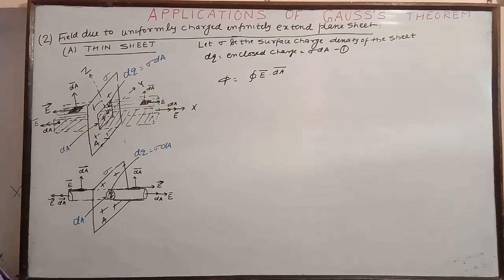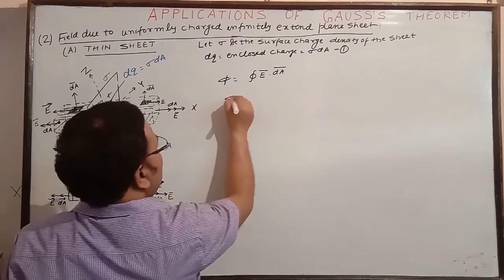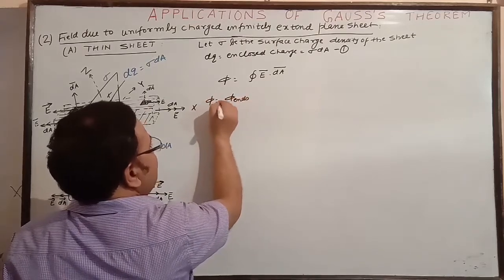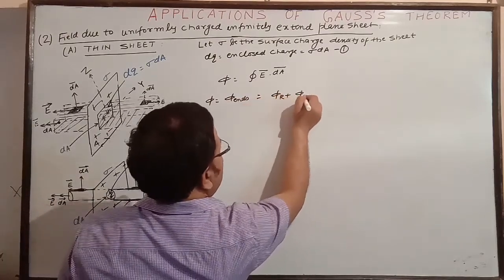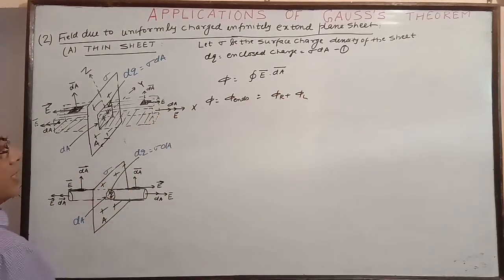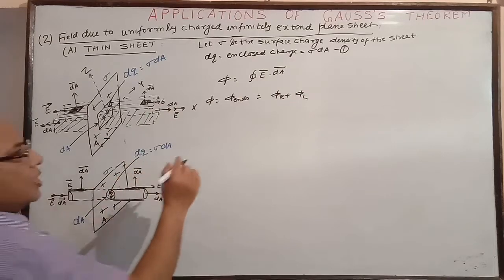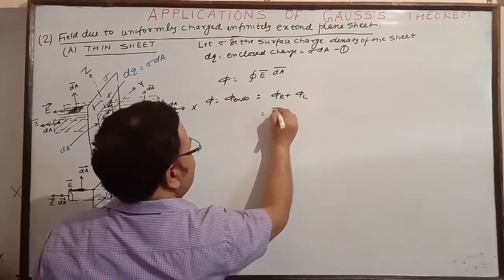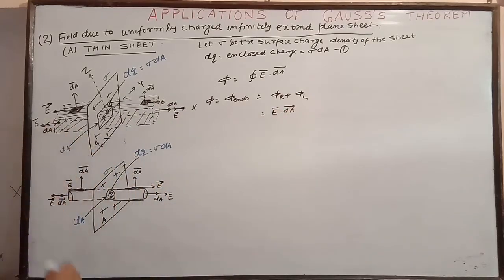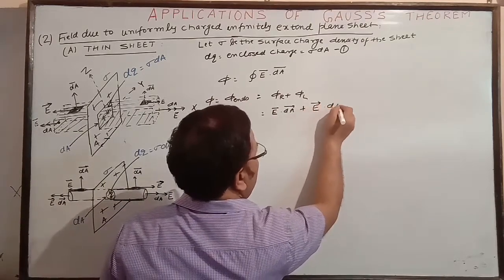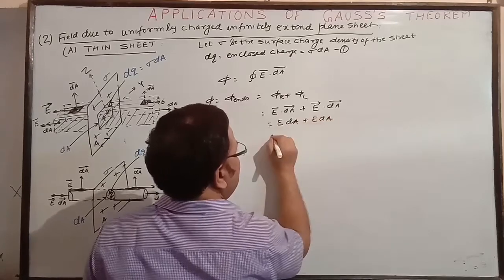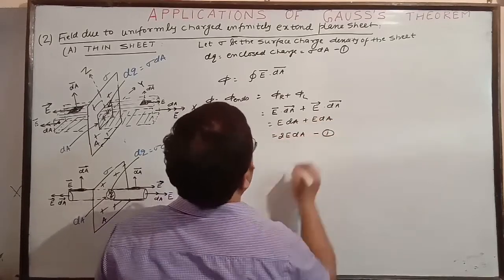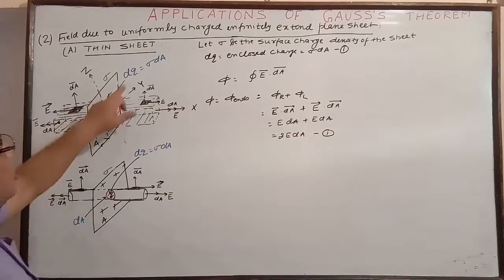Except for the two end caps, all sides contribute zero flux. For the rightmost face, E and dA are in the same direction so flux = E·dA. For the leftmost face, both E and dA are in the negative direction, giving a positive product of E·dA. So the total flux from both end caps is 2E·dA.